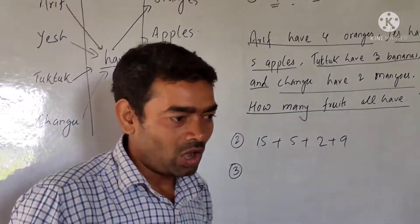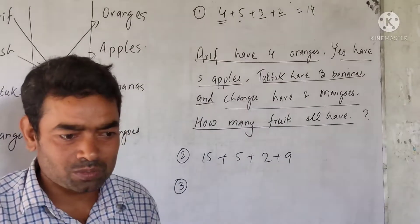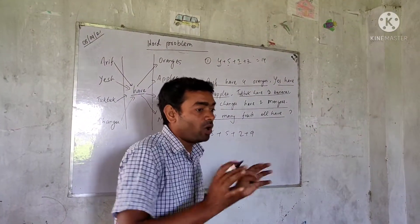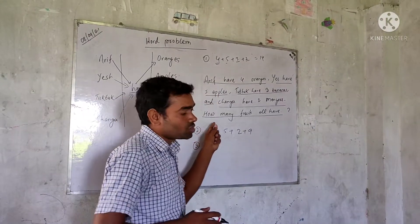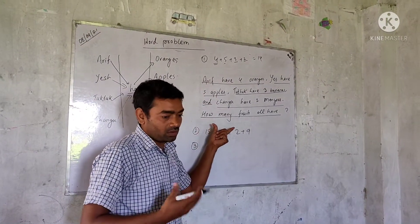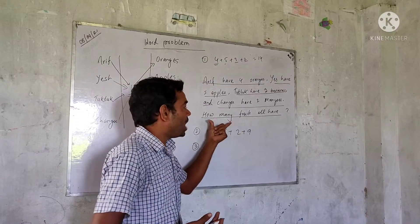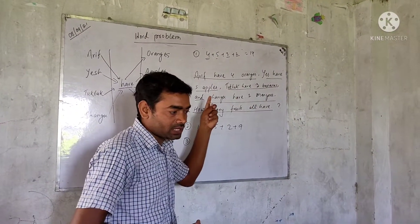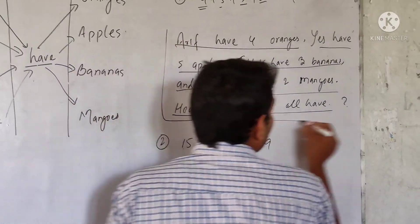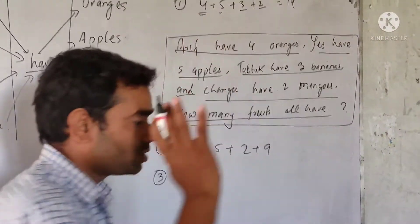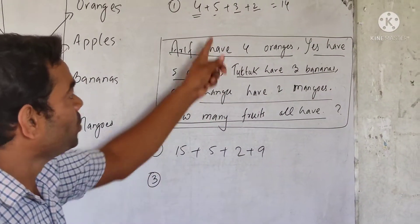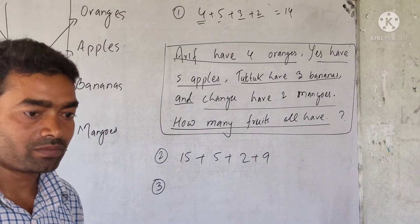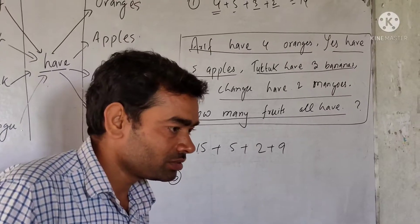There are four friends, and all have different fruits. Now what do you have to do? You have to sum all these things. Then the question will be: how many fruits do all of them have together? The question is ready now, and you can solve it by this method.